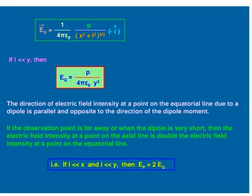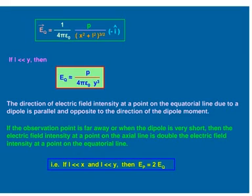To differentiate it from the axial line, let us consider the distance as Y. So, EQ approximately equals P upon 4 pi epsilon 0 Y cubed. Comparing with the axial line, the electric field along the axial direction equals twice the electric field at the equatorial line. Also, the directions are opposite: along the axial line it is along the dipole moment direction, and along the equatorial line it is opposite to the dipole moment.